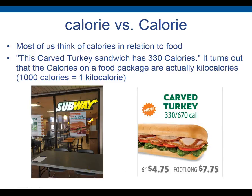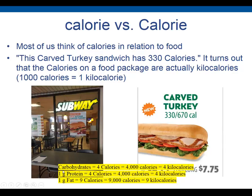Regarding calories on food labels: a Subway turkey sandwich (6 inch) has 330 calories. The lowercase calorie is the scientific unit, but food labels use the uppercase Calorie (kilocalorie). So carbohydrate contains 4 Calories, which is actually 4000 lowercase calories — that is, 4 kilocalories. We have to multiply by 1000 when converting between them.